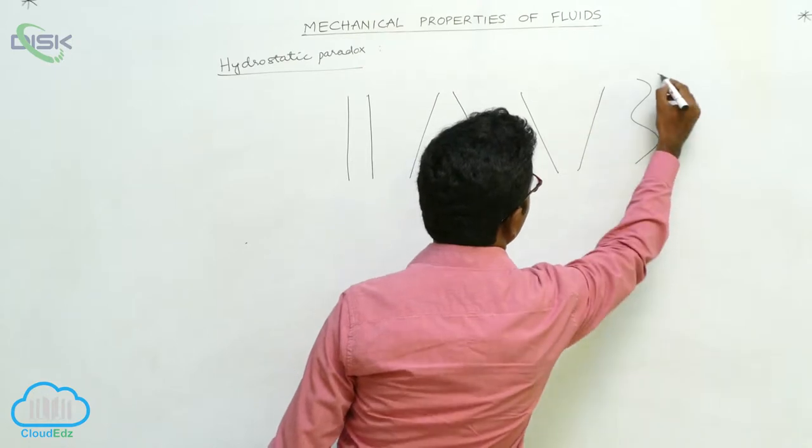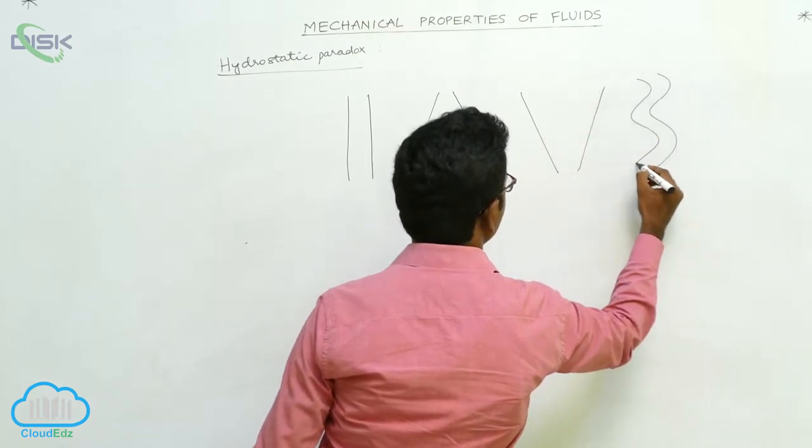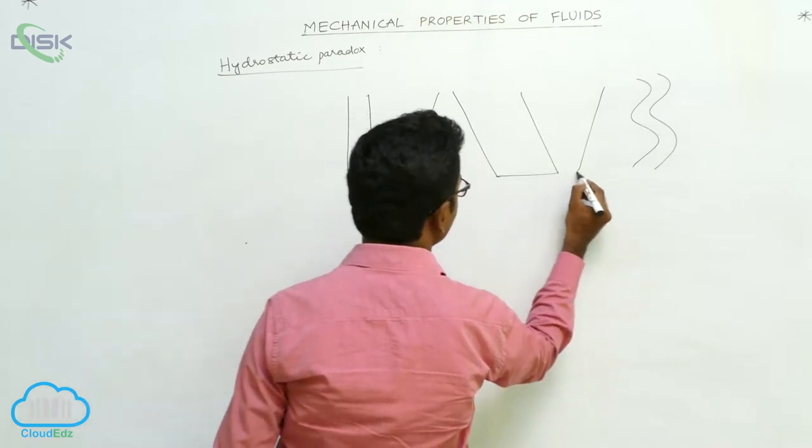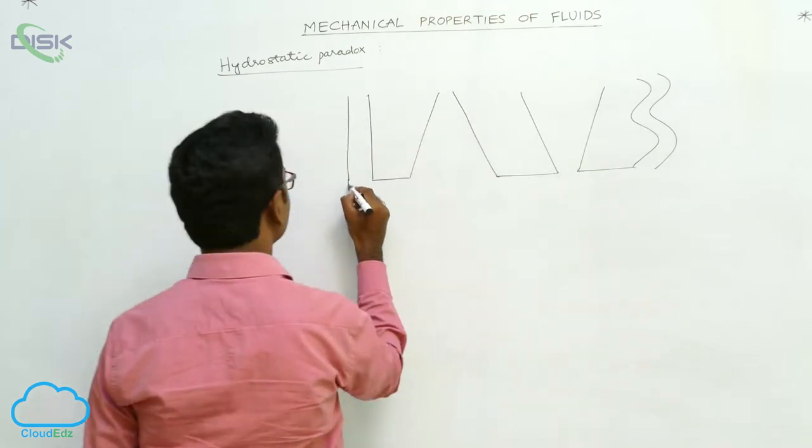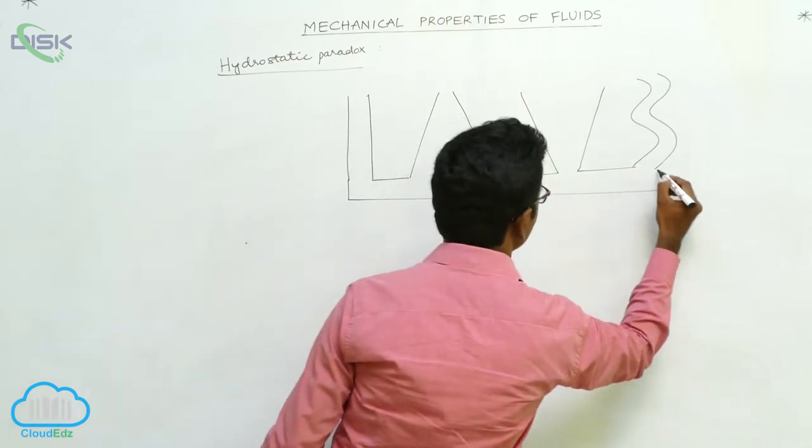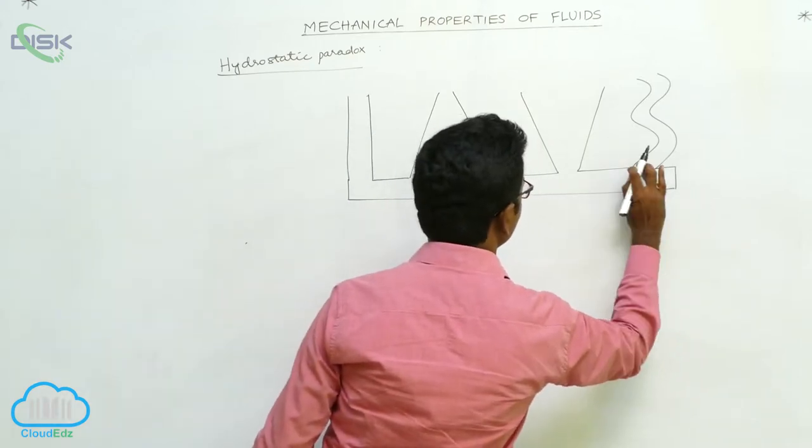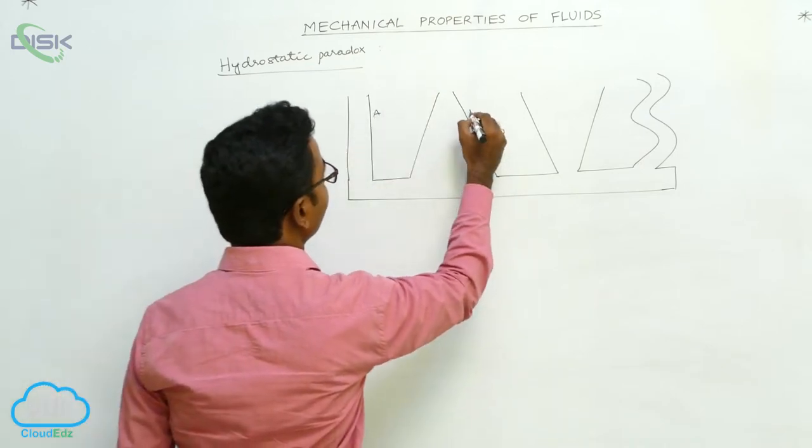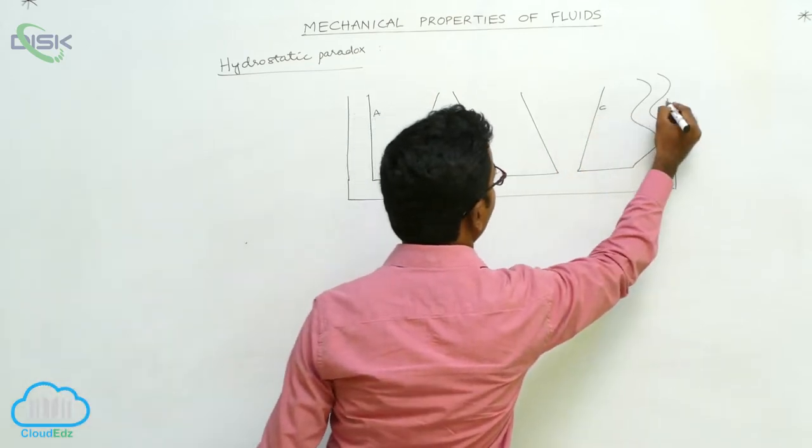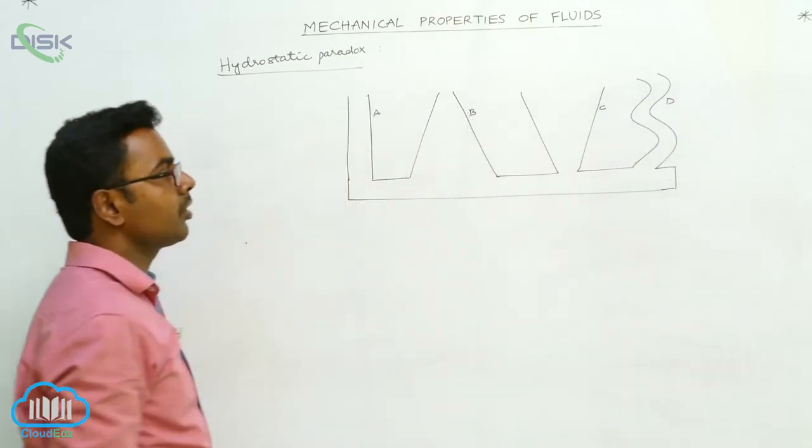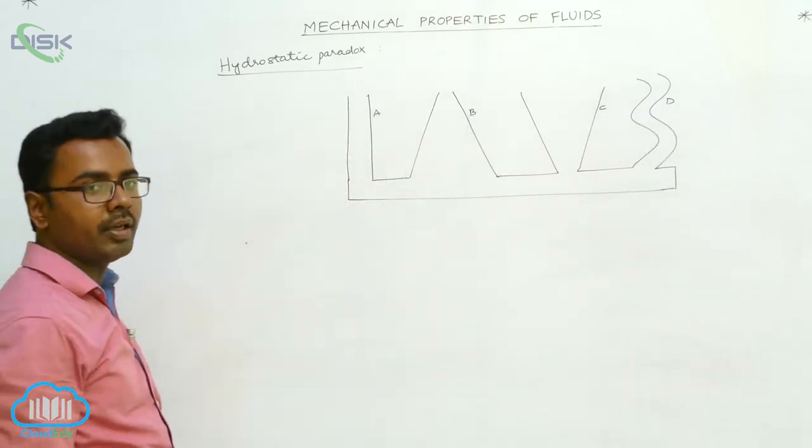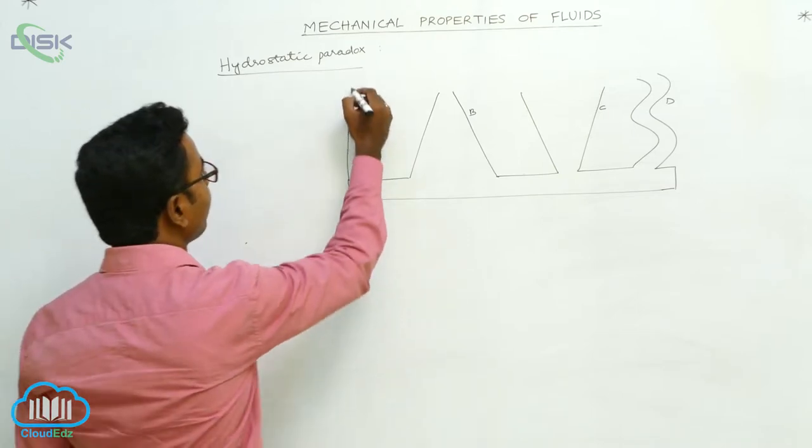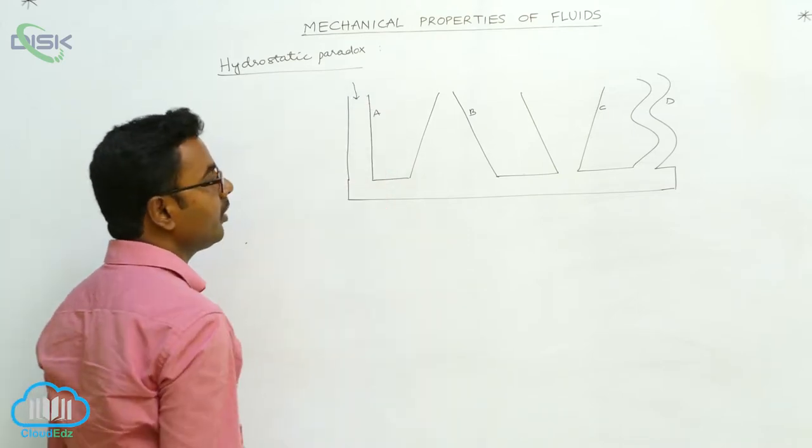All these containers are connected with a horizontal pipe. Now it is having four containers A, B, C, and D. In hydrostatic paradox there are four containers of different shapes. Now if we pour some liquid in one container, then the liquid starts rising in all containers to equal heights.